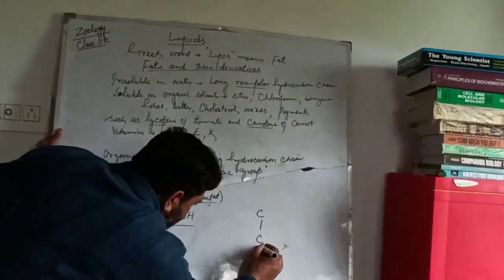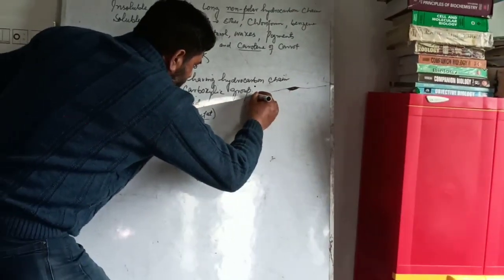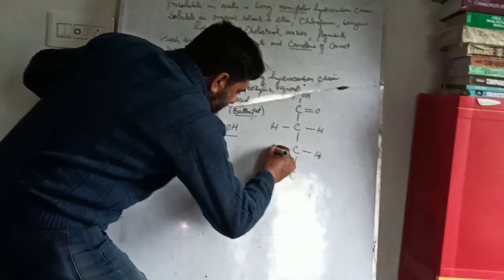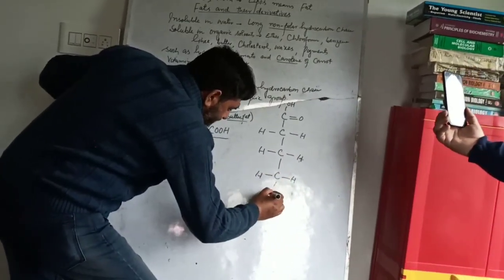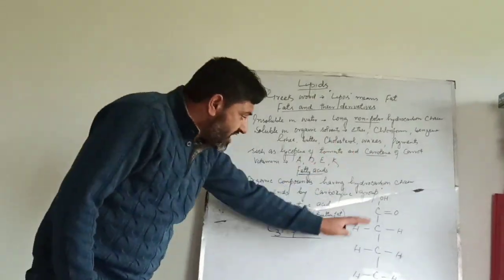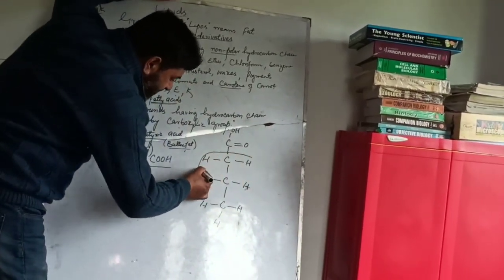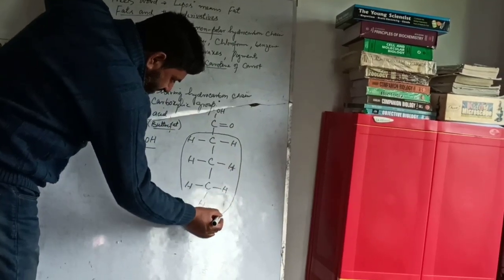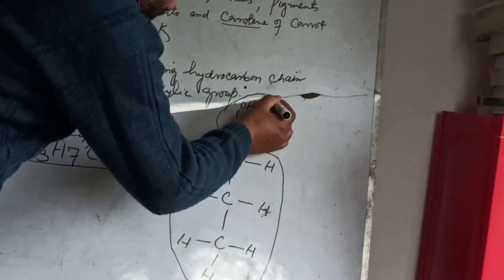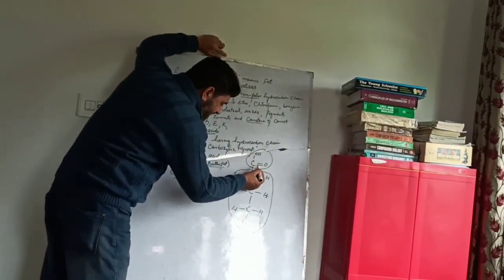If I write it here, these are the three carbon atoms and this is the carboxylic group. This is the hydrocarbon chain attached with hydrogen atoms bonded to the carbon atoms. So this is the fatty acid - butyric acid. This butyric acid consists of two parts: one is the hydrocarbon chain, and the second is the carboxylic group at the end.